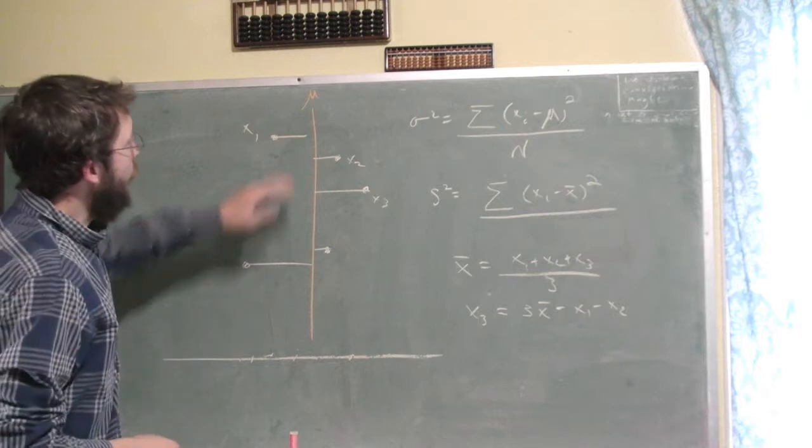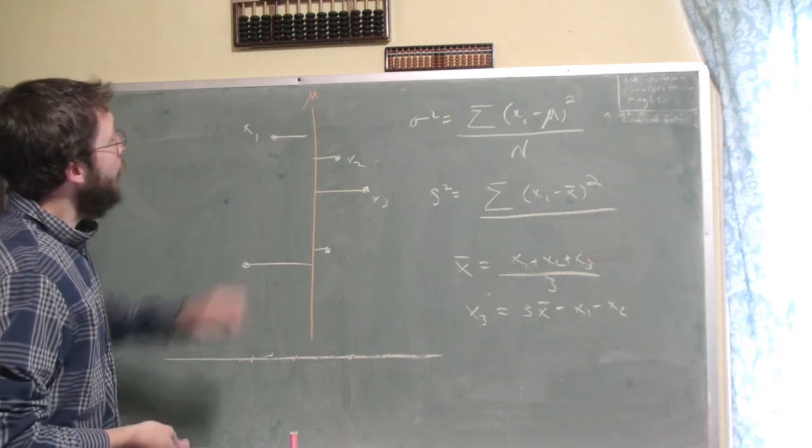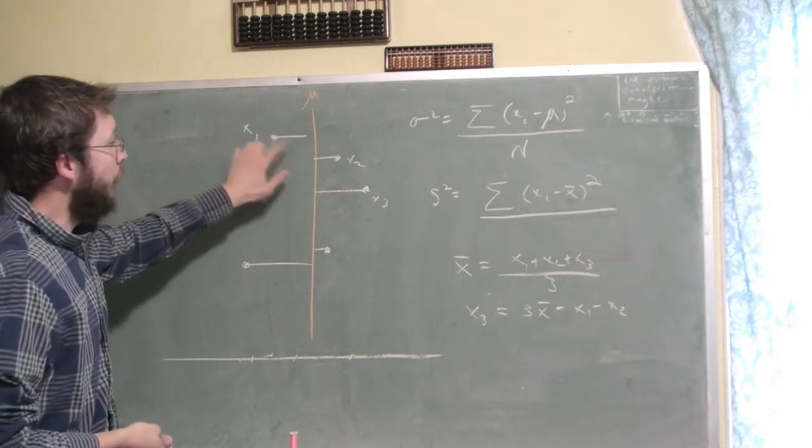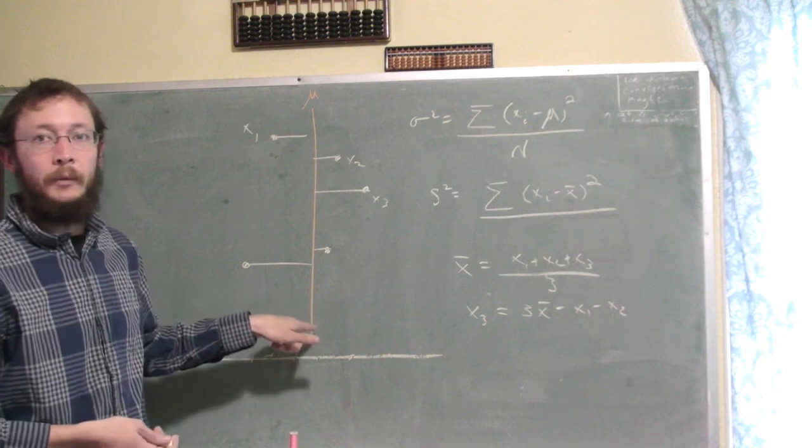So what we can do is take the mean of this five-point population, and one way to measure spread might be, well, let's go ahead and just take the distance that these points fall from the mean.